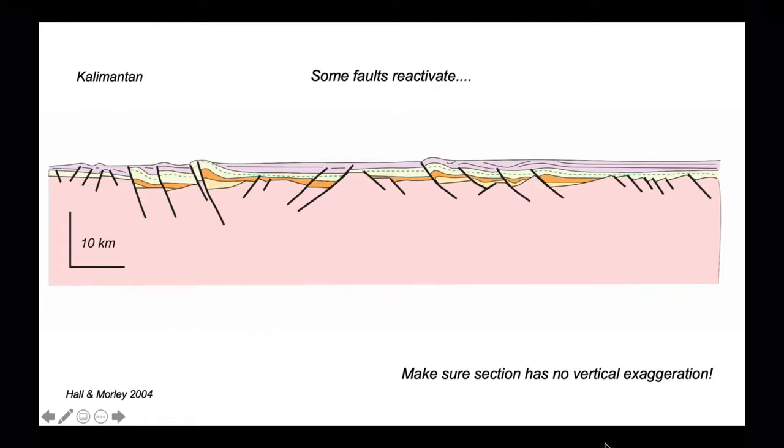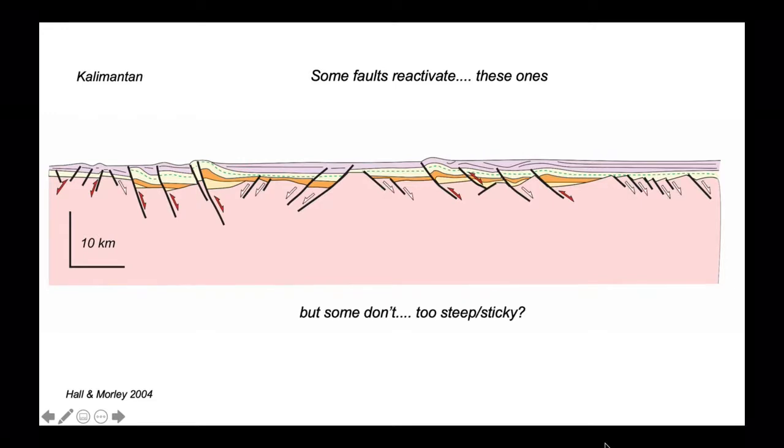Let's see how this works on a cross section. Here's a cross section through offshore Kalimantan based on seismic data. In carrying out this investigation, we have to be really sure that the cross section has no vertical exaggeration, so the dips we see on the cross section are appropriate. Let's look at this cross section and we can see that some faults reactivate and some don't. Here are the ones that reactivate and others are not reactivating. Why? Is this because they were too steep or too sticky with high friction coefficients at the time the reactivation occurred?